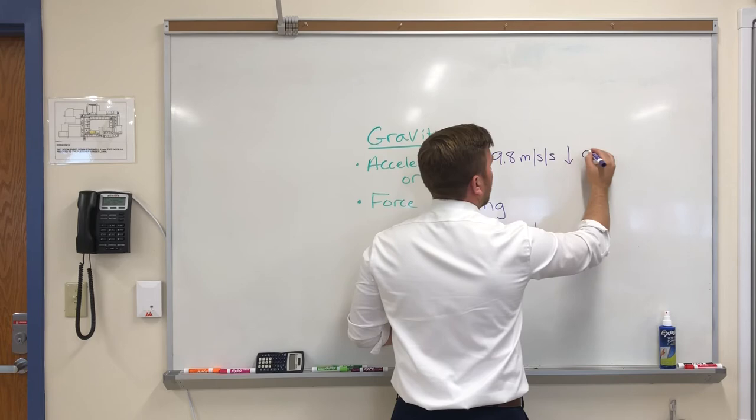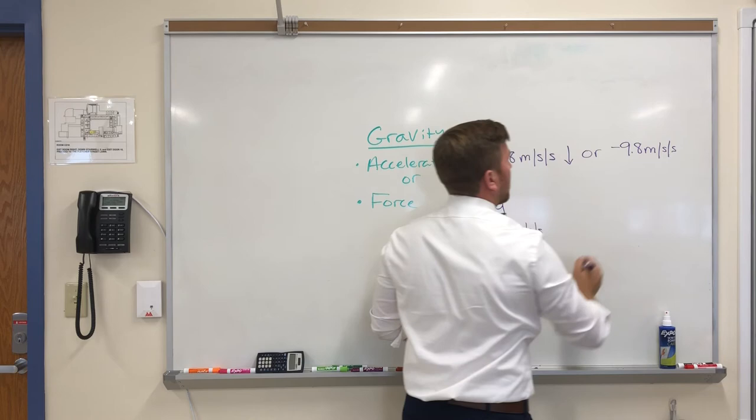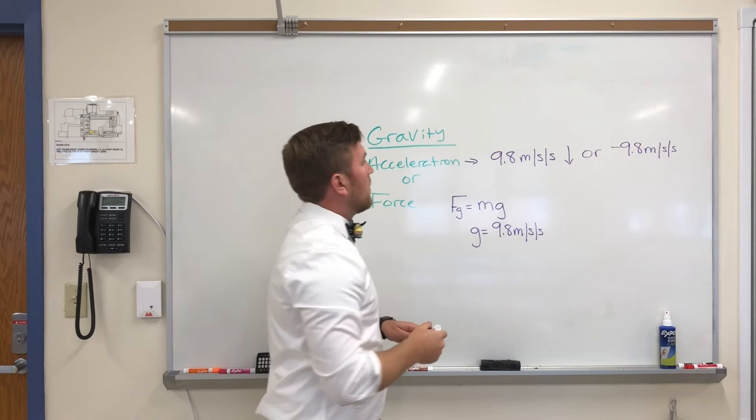So you can indicate that by either saying down, or the much more common way to say it is negative 9.8 meters per second per second, to indicate that it's accelerating things in the downward direction.